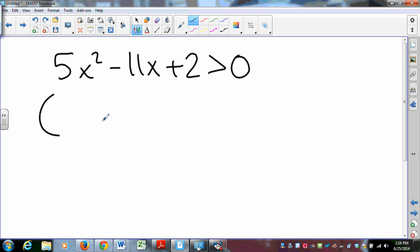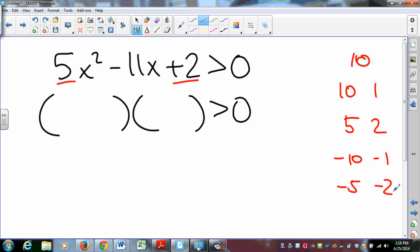We need factors, and we set that product positive. So 5 times 2 is 10. We're going to look for factor pairs of 10. 10 and 1 work, 5 and 2 work, negative 10 and negative 1 work, negative 5 and negative 2 work. We're looking for the factor pair that adds up to negative 11. That's this factor pair. So we have 5x² - 10x - 1x + 2.